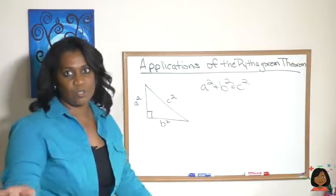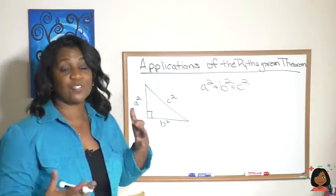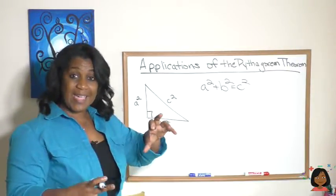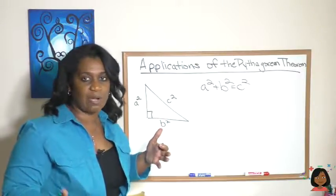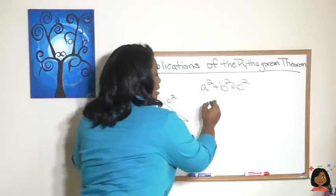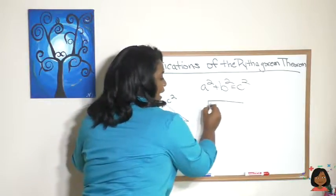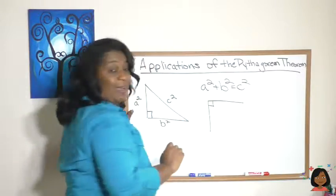Now how can this be useful in real life? Well, whenever we have to draw right triangles or get square corners on something. So let's say you were in construction and you had to make a closet and you wanted to make sure the closet, that this angle was a right angle.